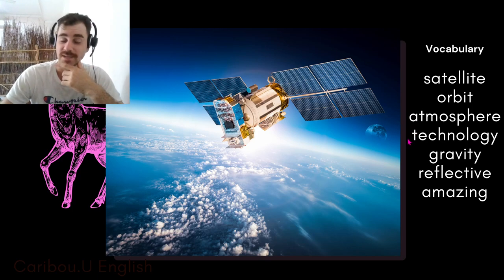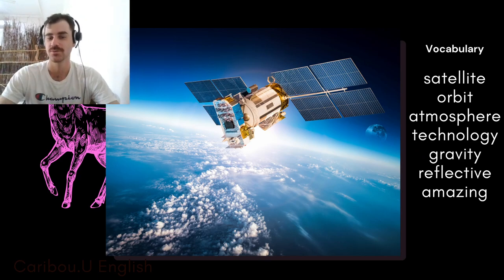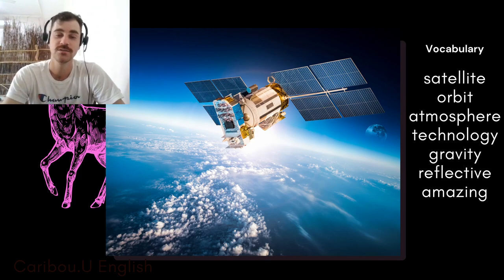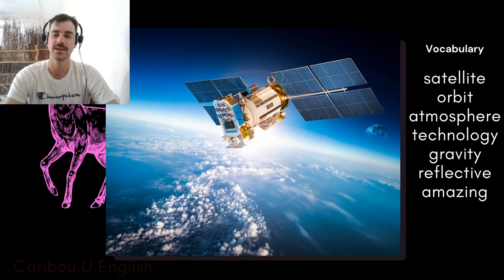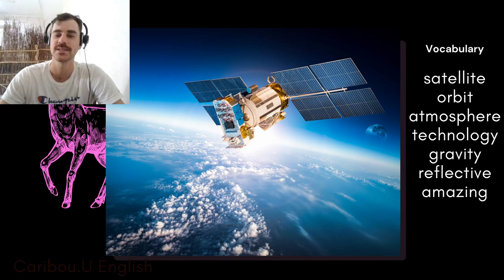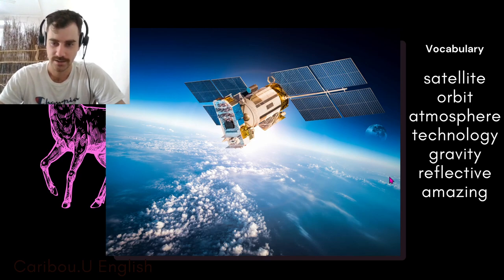It's obviously a type of technology. Gravity is the force which pulls things down towards the earth. Reflective — in the first picture, you remember we had reflection, which is a noun. Reflective is an adjective, so you use it to describe something. You can say the satellite has a reflective surface. And in my opinion, that picture is quite amazing.